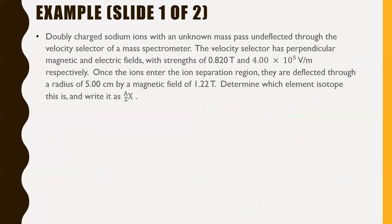Next example: doubly charged sodium ions with an unknown mass pass undeflected through the velocity selector of a mass spectrometer. The velocity selector has perpendicular magnetic and electric fields. Once the ions enter the ion separation region, they are deflected through a radius of 5 centimeters by a magnetic field of 1.22 teslas — note this magnetic field is in the detection chamber, not the velocity selector. Determine which element isotope this is and write it in the format A over Z X.